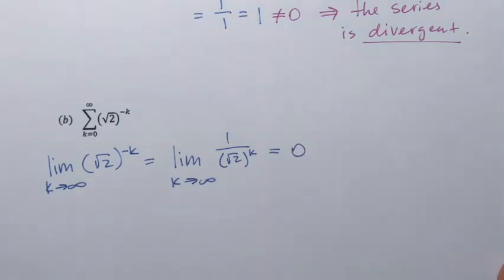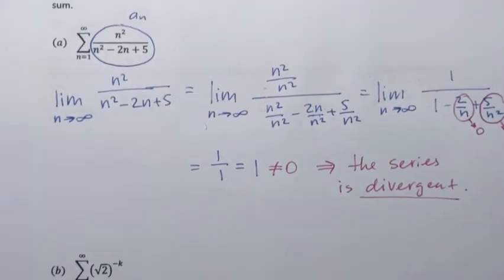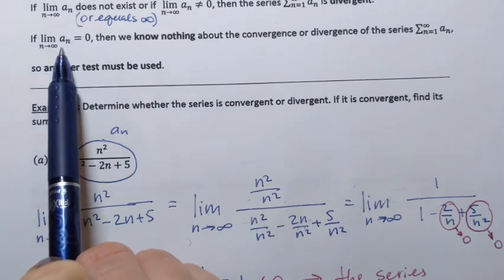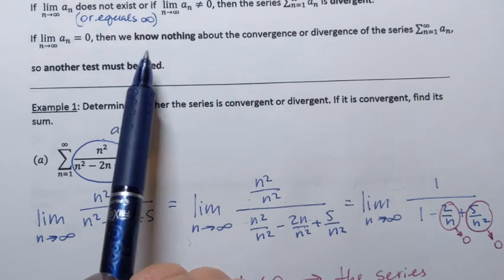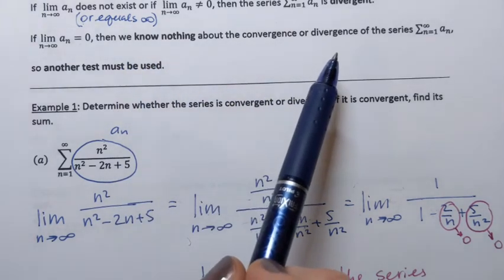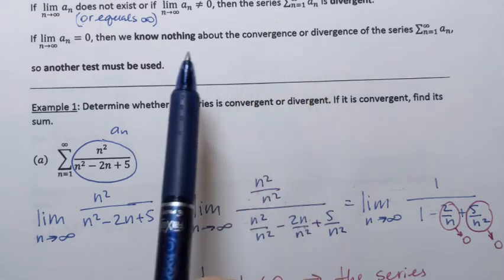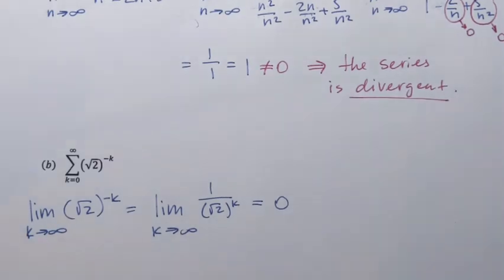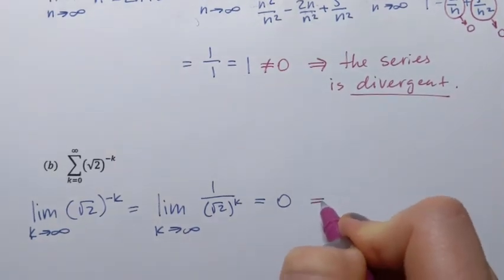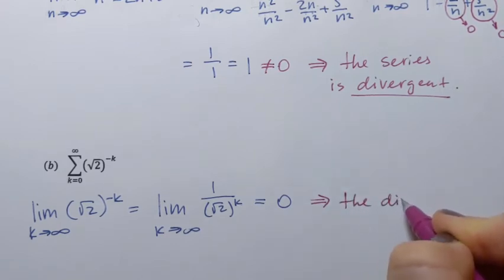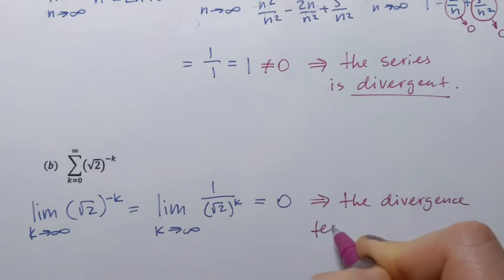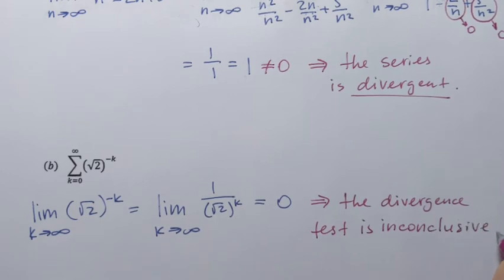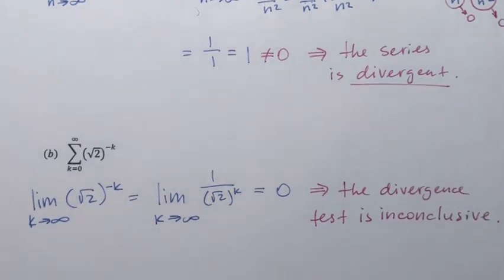The fraction itself will approach 0, so the limit equals 0. When the limit is 0, that is the second case — if the limit of the general term equals 0, we know nothing about the convergence or divergence of the series based on this test. The divergence test is inconclusive in this case, so we need to try something different.